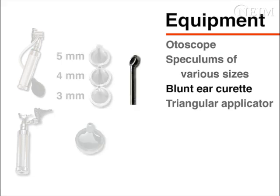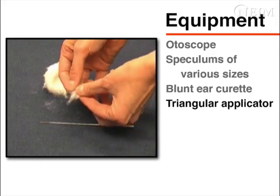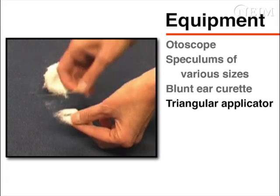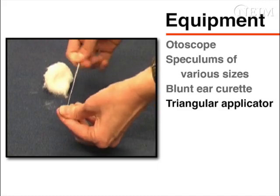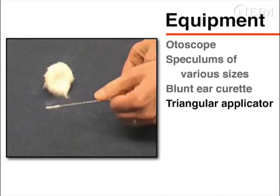An appropriately sized blunt ear curette can be used to remove large pieces of cerumen. Metal curettes are preferable to plastic curettes. The rigid and delicate loop on the metal curettes allows for finer dissection. If small fragments of cerumen remain after using the blunt curette, use an applicator with a non-serrated triangular tip wrapped with cotton. This can also be used to clear otorrhea in children with acute otitis media who have ruptured tympanic membranes.